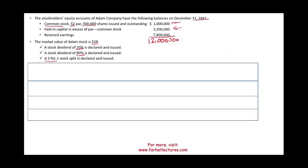Let's get started with a stock dividend of 10%. When it's a 10% stock dividend, it means it's less than 20% to 25% of the outstanding shares, so we consider this a small stock dividend. Anything greater than 20% to 25% is considered a large stock dividend, and there is a different treatment depending on whether it's small or large.